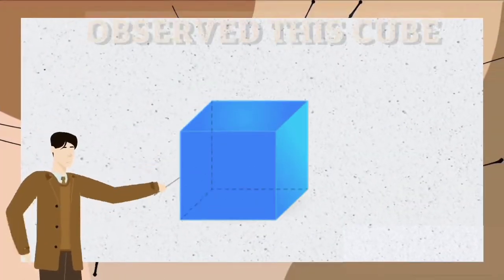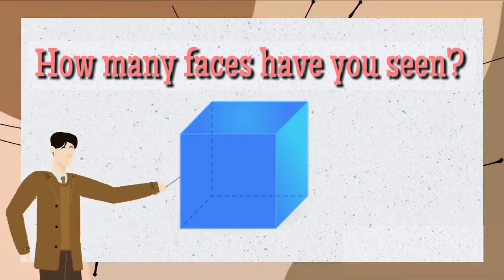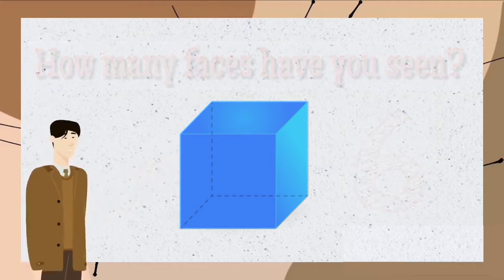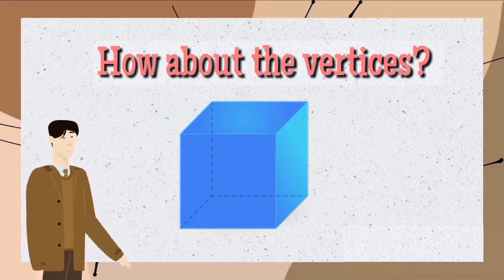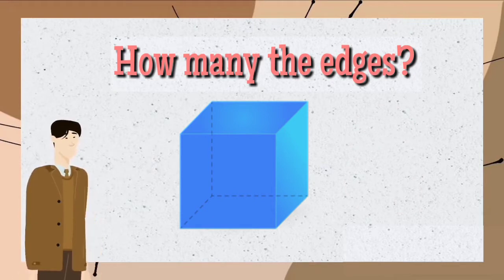Now, observe this cube. How many faces have you seen? If your answer is six, then you're right. How about the vertices? You're right! It's eight. And the edges? It's twelve.